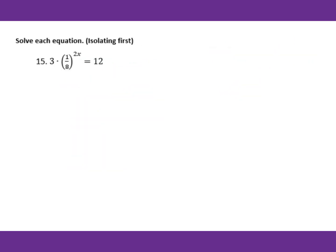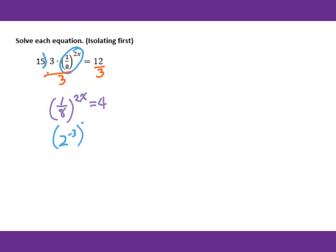For number 15, we need to isolate the power on one side. Divide both sides by 3. You get 1 over 8 to the 2x power equals 4. Change to common base 2: 8 is 2 to the 3rd, so 1 over 8 to the 2x is 2 to the negative 6x, and 4 is 2 squared. Base cancels: negative 6x equals 2, so x equals negative 1 over 3.